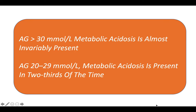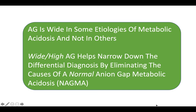When the anion gap exceeds 30 mmol/L, metabolic acidosis is almost invariably present. If it is between 20 and 29, metabolic acidosis is present in about two-thirds of cases. A wide or high anion gap helps narrow the differential diagnosis by eliminating causes of normal anion gap metabolic acidosis, known as NAGMA. High anion gap acidosis is called HAGMA or WAGMA.